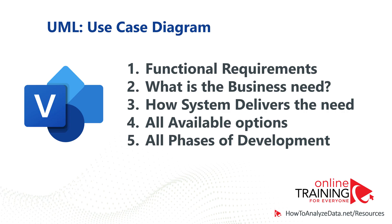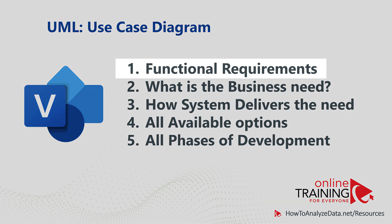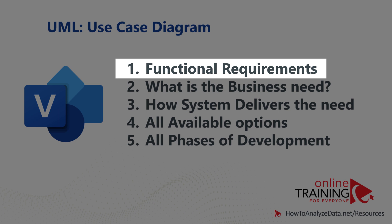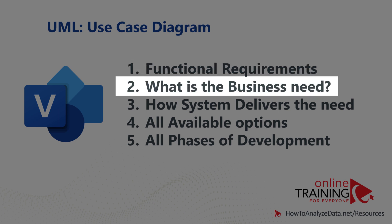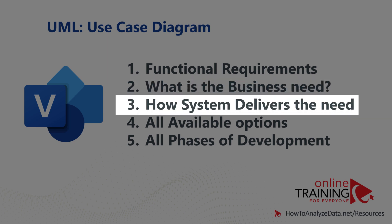The main purpose of UML Use Cases Diagram is to show what actors can do in the system. Typically, what actors can do in the system represents functional requirements. Use Cases Diagram also helps people understand what the actual business need behind the system is — which business problem are we trying to solve — and by looking at the diagram everybody on the project team will be able to see how the system actually solves the problem.